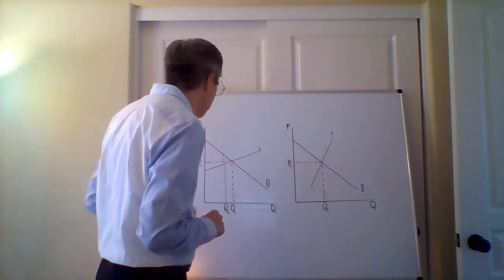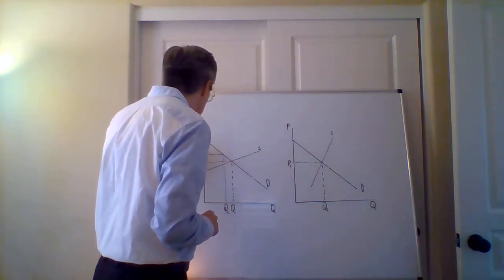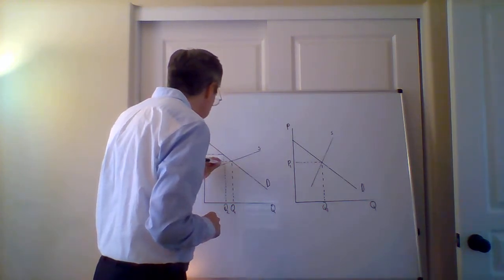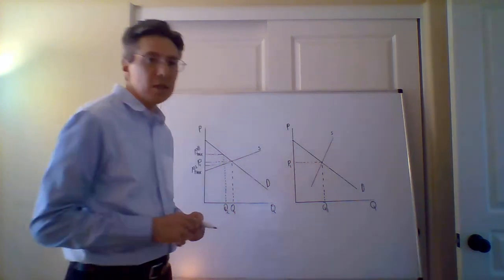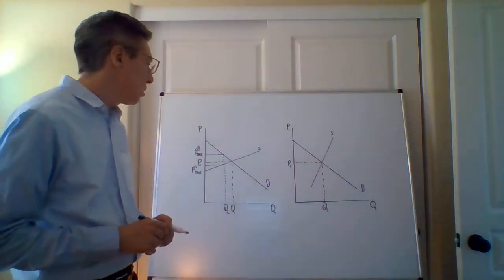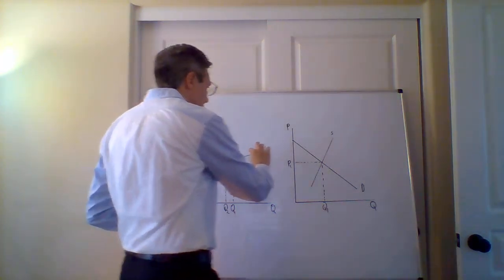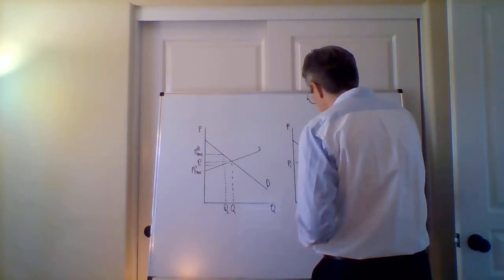So the same reduction in terms of the quantity, price buyers pay going up, the price sellers receive going down, and so let's take this same tax and apply it onto this graph.